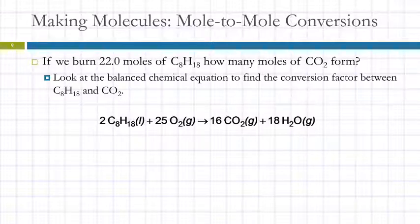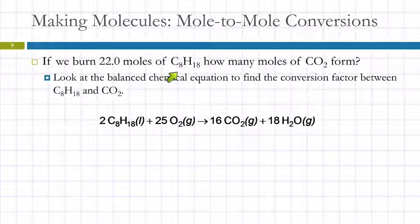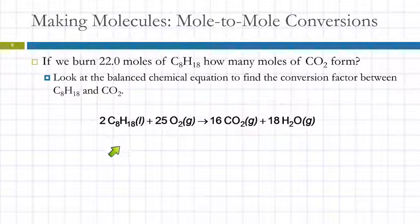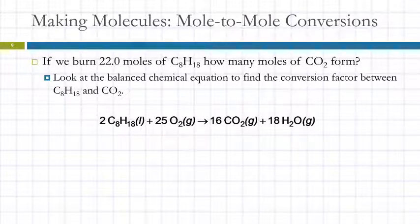Let's do a chemistry example — back to the greenhouse gas. If we burn 22 moles of C8H18, this is octane. Do you recognize why that could be octane? It's got eight carbons — oct is a prefix for eight. Burning 22 moles of octane, how many moles of carbon dioxide can we make? We're using this balanced chemical equation, and the equation tells us that two moles of octane would give us 16 moles of carbon dioxide.